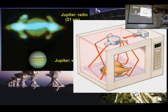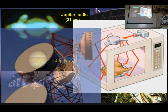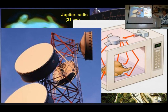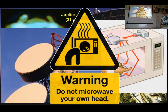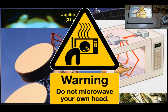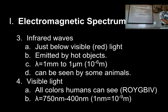Microwave energy gets used to heat up food. The way it does that is by shaking water molecules because of the small energy oscillations. Microwave energy can also be used for communication — these are microwave transmission towers that send communication from point to point, similar to radio waves. Obviously, do not microwave your head.